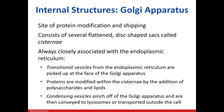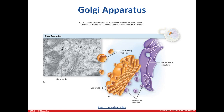The Golgi apparatus — you may have heard it described as the post office or UPS. It does it all: taking the proteins made by the rough ER, modifying them, packaging them, and shipping them using condensing vesicles. The transitional vesicles pinch off of the ER and contain the protein that was made, then dock on the Golgi apparatus, where it's modified, packaged, and shipped.